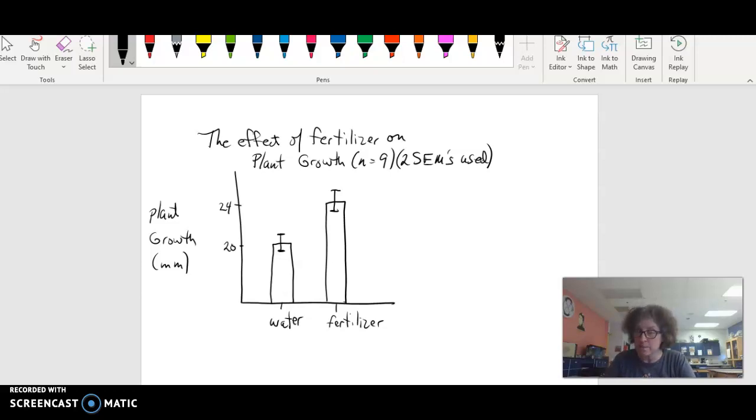The sample size was 9, and there are two SEMs used, and that means that the standard error that was calculated was multiplied by 2, and then was used in each case. Two values of the SEM were added to the top, added to the average of 20, and then two values were also added going down from 20 to create this error bar.